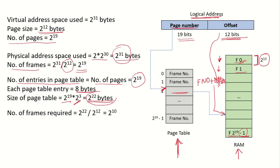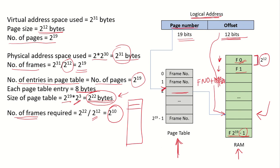This page table also resides in main memory. So how much space does it take? How many frames are required? The total size of the page table divided by the frame size gives us 2^22 / 2^12 = 2^10 frames. In the traditional method, all 2^10 frames would be consecutive and the page table would be stored there.